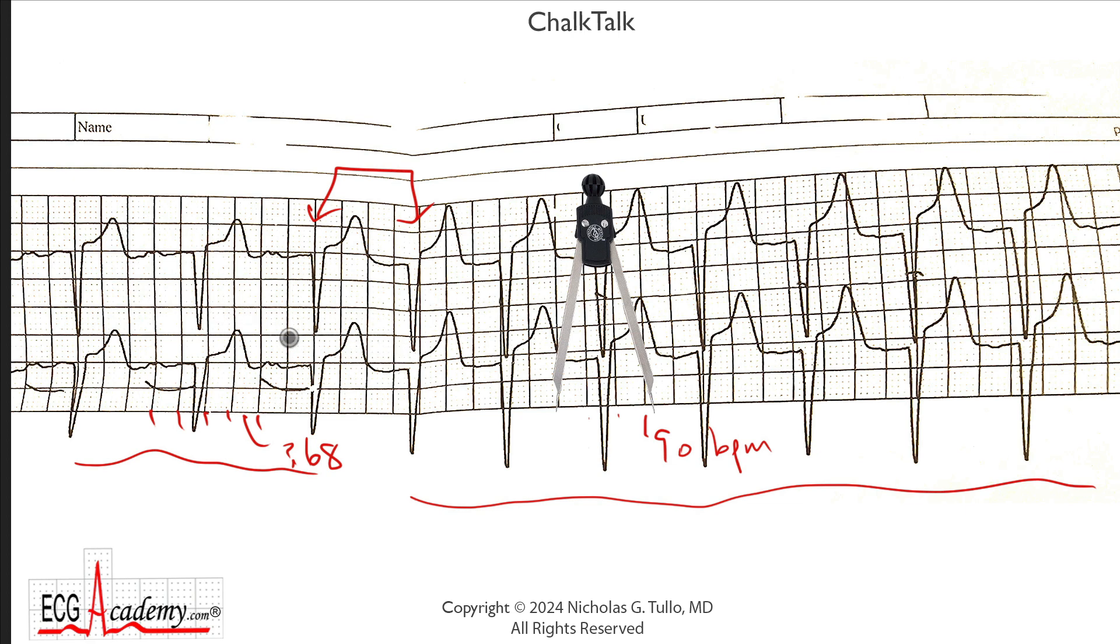When you start looking at the details, these first three QRS complexes have a pretty clear P wave in front of them. And the other thing is that the PR interval is really quite long. This PR is measuring almost 400 milliseconds, two large boxes. Let's zoom in and make it a bit easier on us.